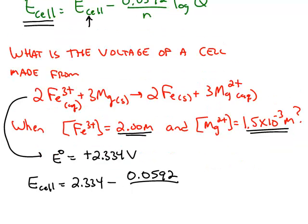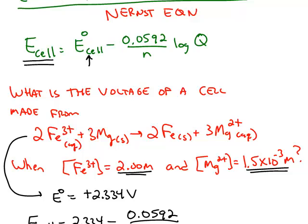We can find n for this reaction. Notice the iron goes from a positive 3 down to 0, so the iron had to gain 3 electrons. And the magnesium is being oxidized from neutral to a positive 2, so it had to lose 2 electrons. 3 electrons are gained, 2 electrons are lost.